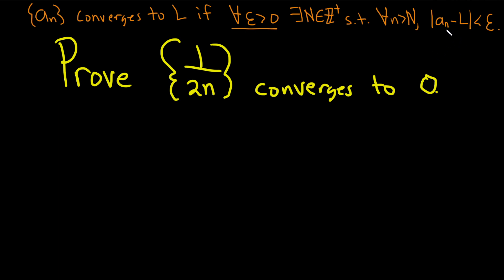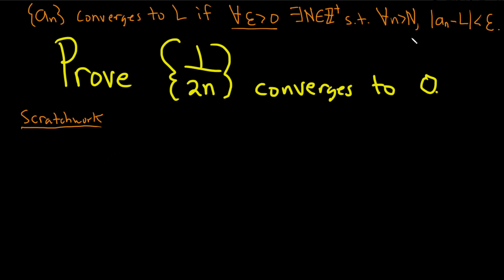If you can make the distance small for any epsilon, that means you can get as close as you like. Now let's work through this — first we're going to figure out the proof via scratch work, and then we're going to write up the proof. This scratch work is not really the proof.